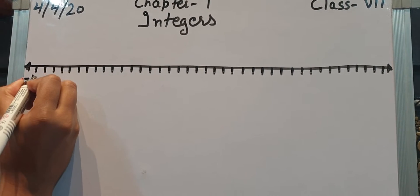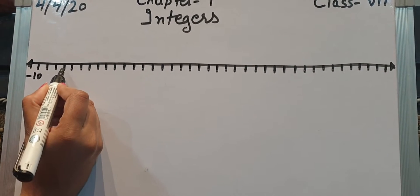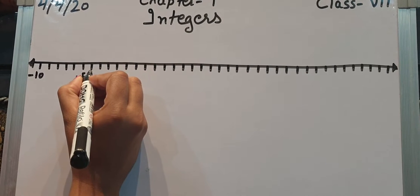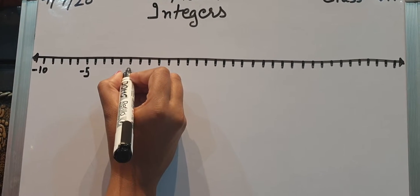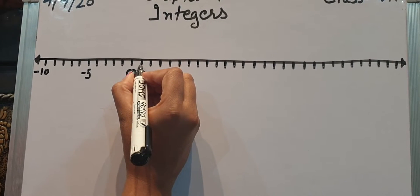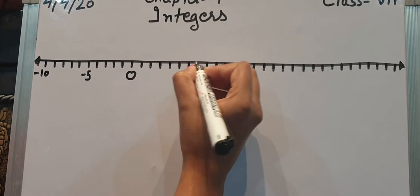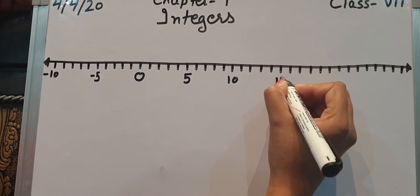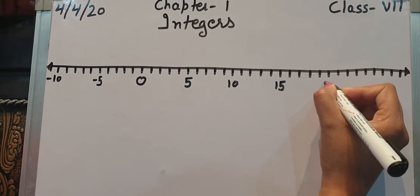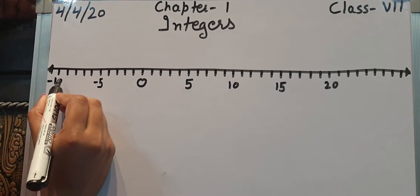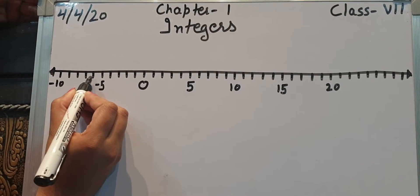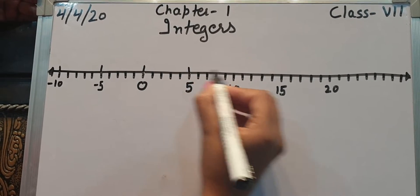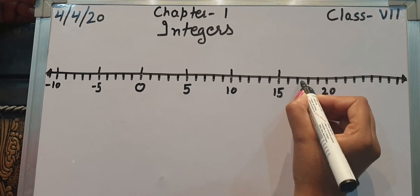In the question, the number line starts at minus 10, then after 4 gaps it reaches minus 5, then 0, then 5, then 10, then 15, and then 20. Each interval has 4 bars between the marked integers. We will also extend to 25, even though it was not written in the question.